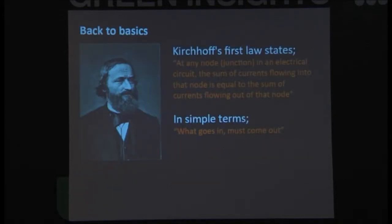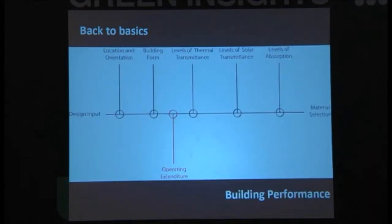It's based on Kershaw's first law, which states that what goes in must come out. So when we look at energy conservation within a building, whatever we put into a building design, that's what's going to come out of the building. So we look at the location and orientation, the building form, the levels of thermal transmittance, solar transmittance, absorption. We get all that right and we get a good operating expenditure. We put rubbish in, the operating expenditure becomes very expensive.